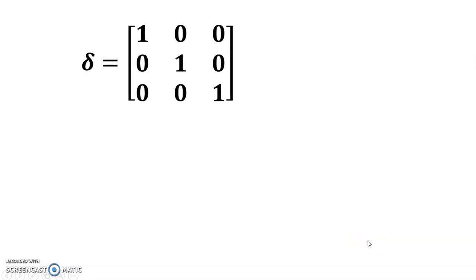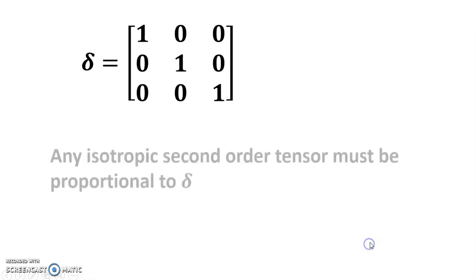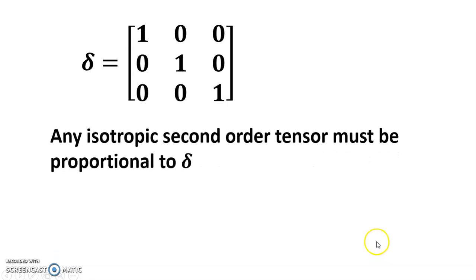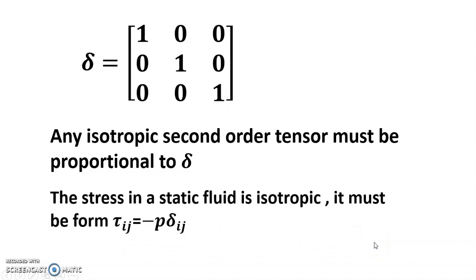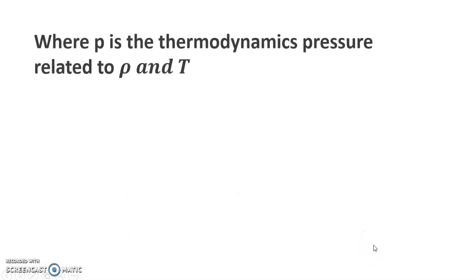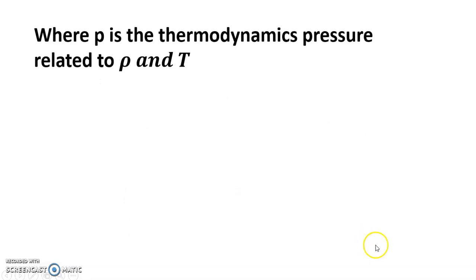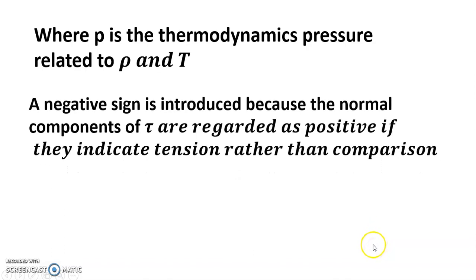Delta equals 1 0 0, 0 1 0, 0 0 1. Any isotropic second-order tensor must be proportional to delta_ij, and the stress in a static fluid is isotropic. It must be tau_ij equals minus p delta_ij, where p is the thermodynamic pressure related to rho and T for temperature.